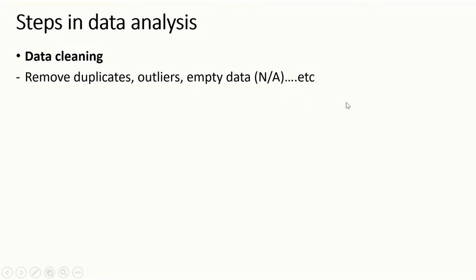Then we have empty or missing data. For example, someone was entered without their gender or age, yet it is needed. So you have to remove such data, or if there is too much missing data, we shall look at a way to sort it out — what we call data imputation.